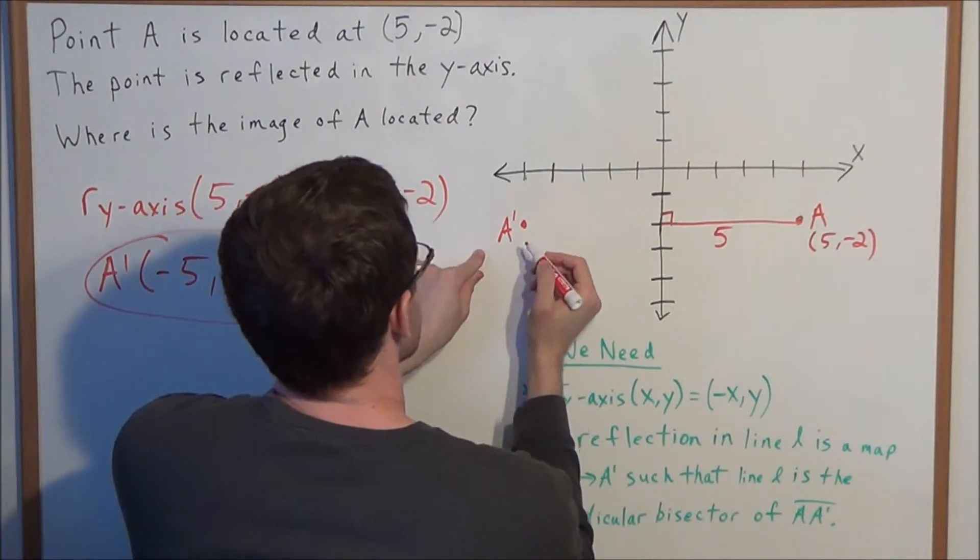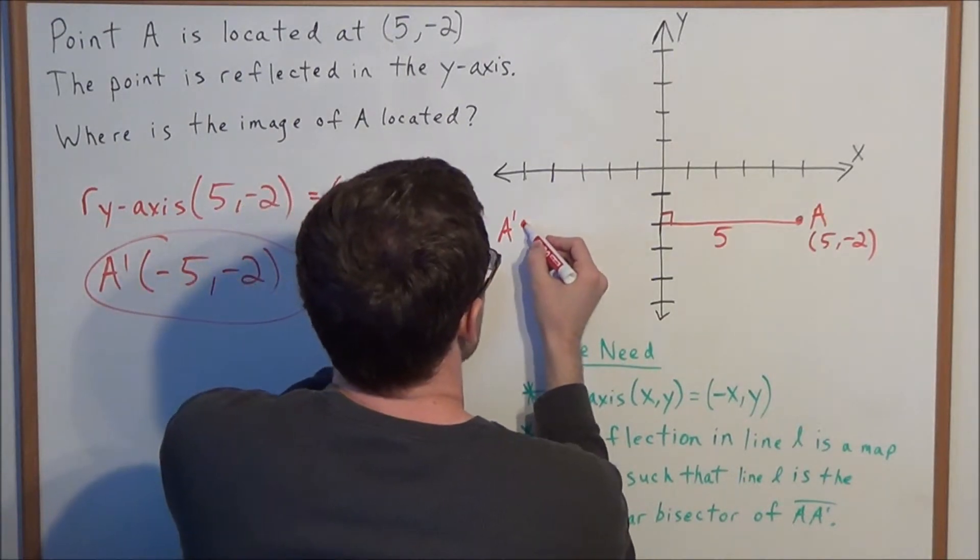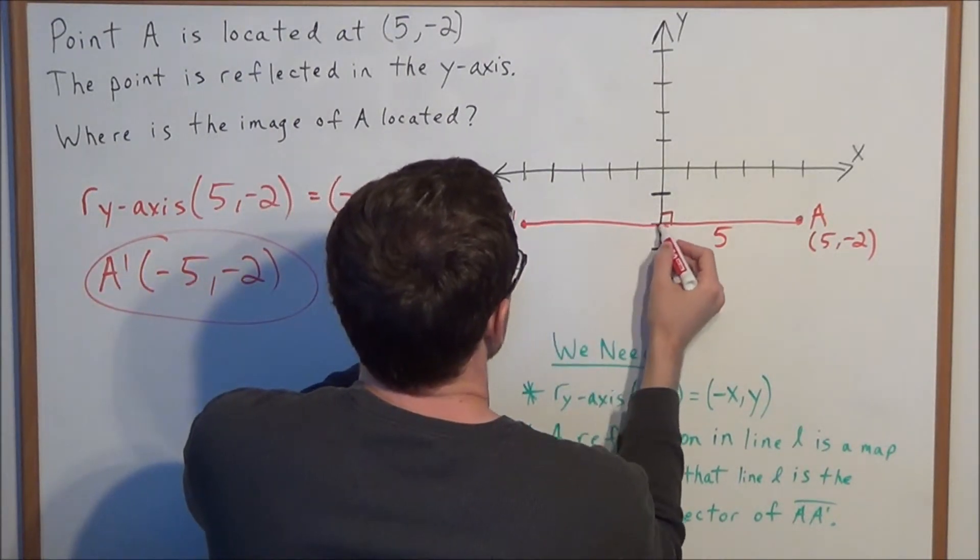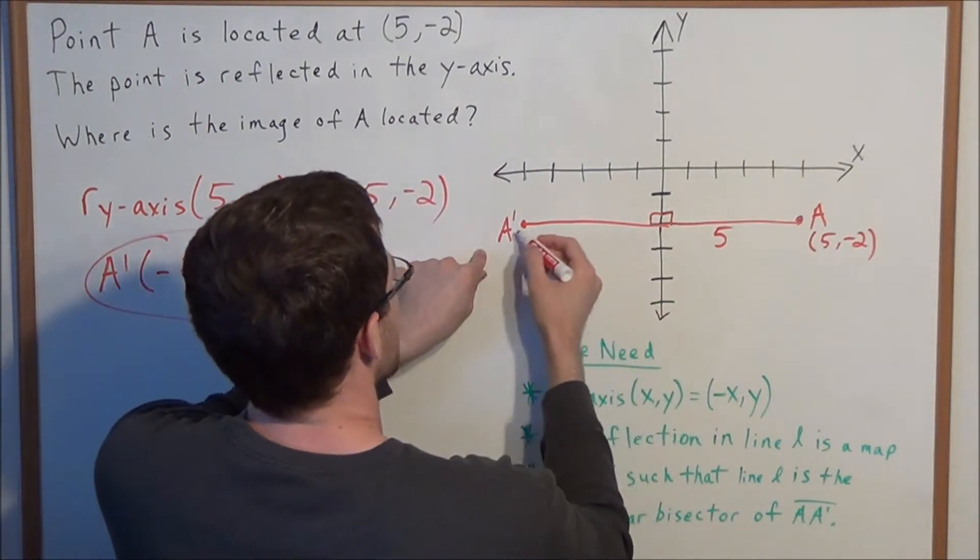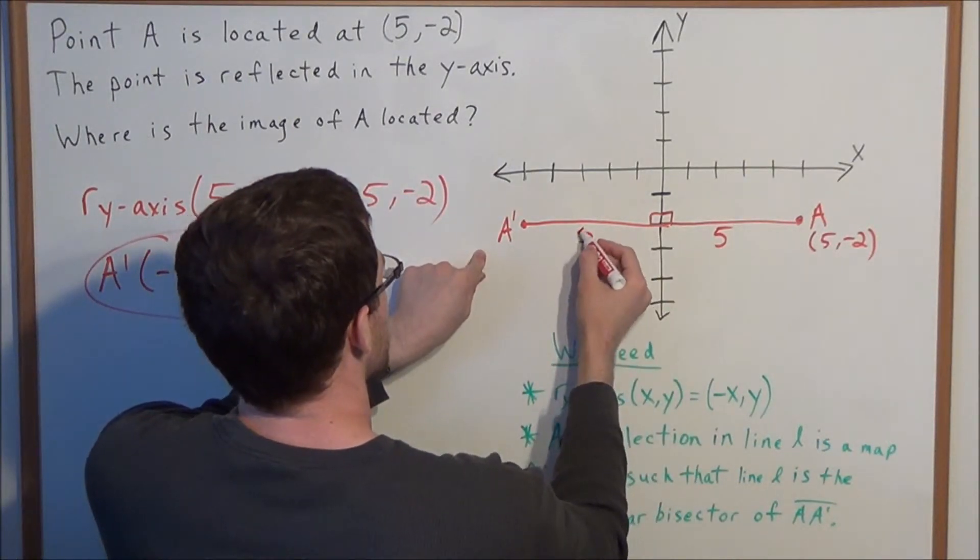So now we label this, and we could even draw a line segment to the y-axis. And this line segment is also going to be 5 units long.